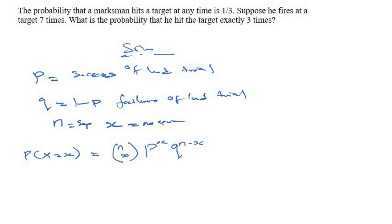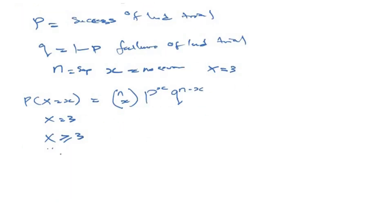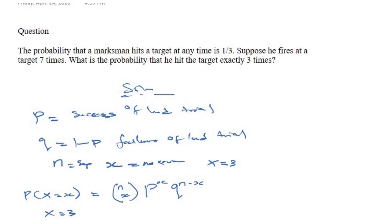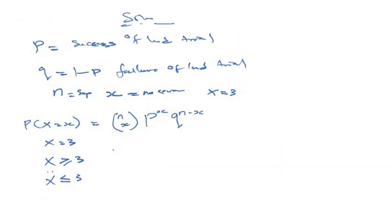This is quite simple but can be tricky. If you are given 'exactly three times,' then x equals three. If you are told 'at least three times,' x will be greater than or equal to three. If you are told 'at most three times,' x will be less than or equal to three. It depends on what you are given from the question. In our question, we are told he hits the target exactly one over three times, so our p, the success, is equal to one over three.